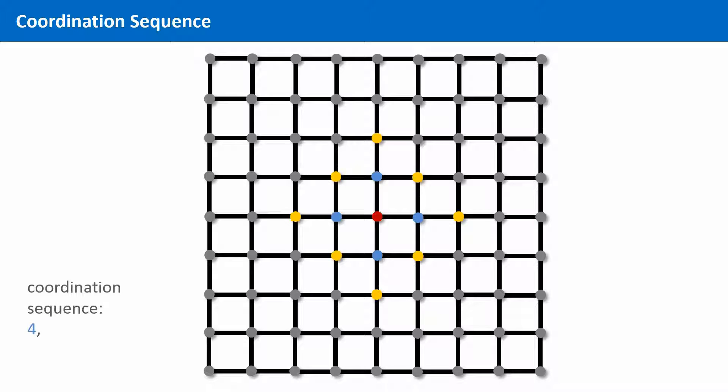Next, you count the number of nodes that are exactly two edges away from the origin. This time, all these nodes are marked in yellow. And we have eight of them. We write down eight.